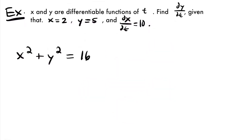All right, welcome back. Let's start with this example. We are told that x and y are differentiable functions of t, and we want to find dy/dt given that x equals 2, y equals 5, and the rate at which x is changing with respect to t is equal to 10. And we are given our function x squared plus y squared equals 16.